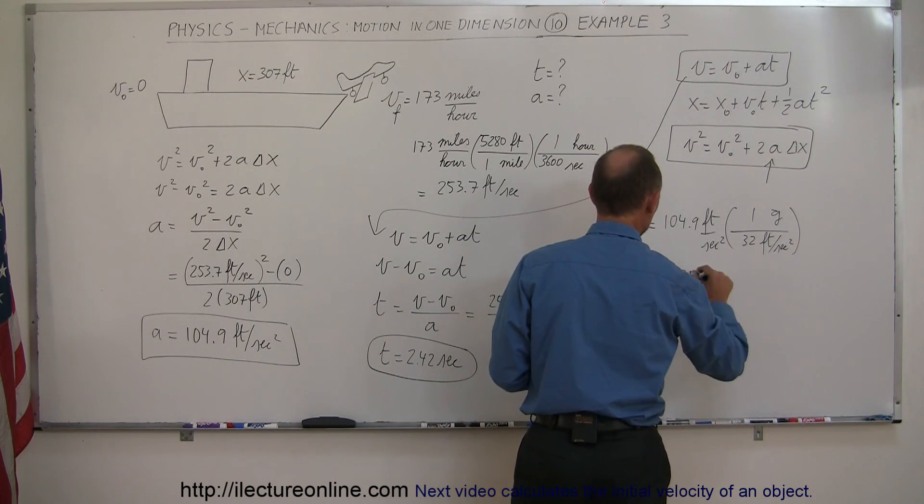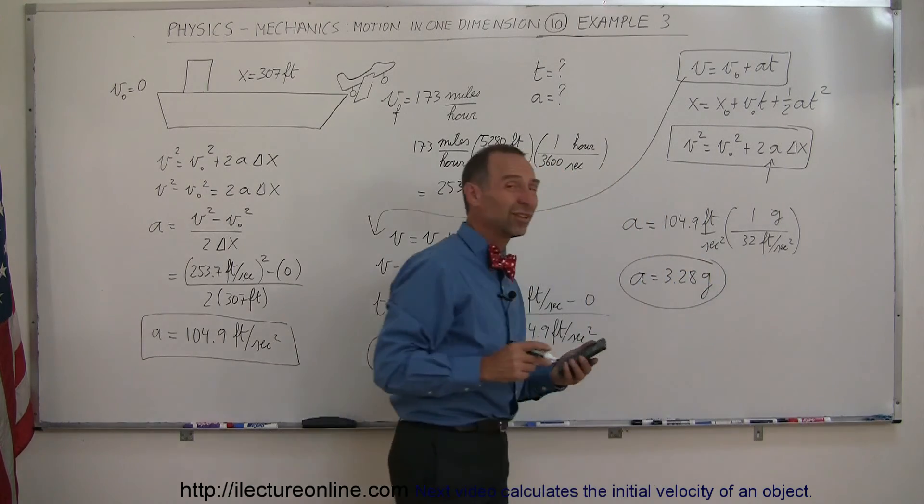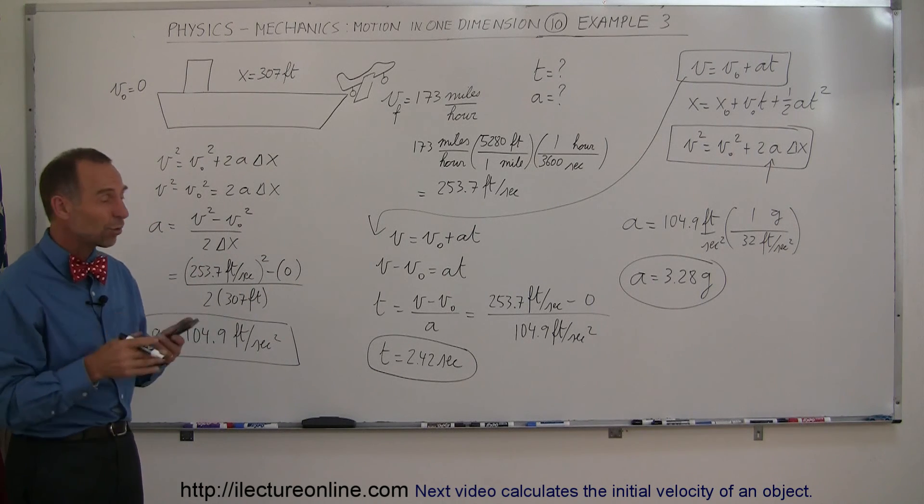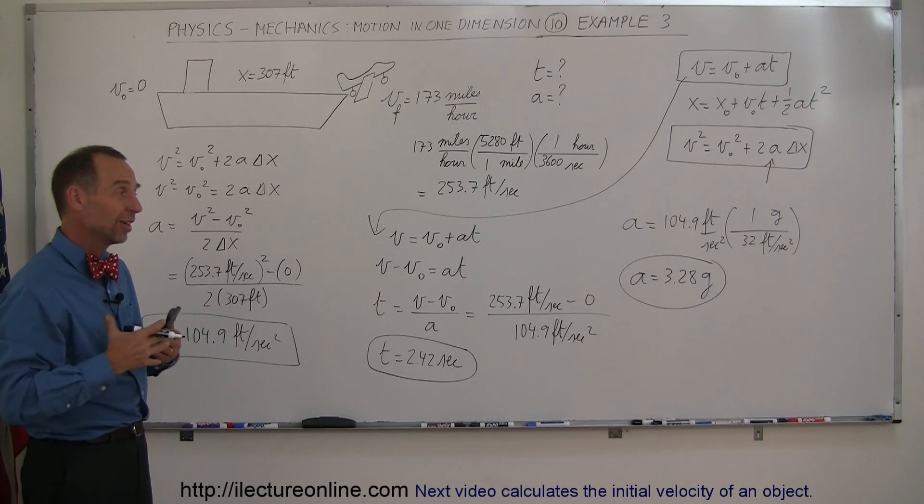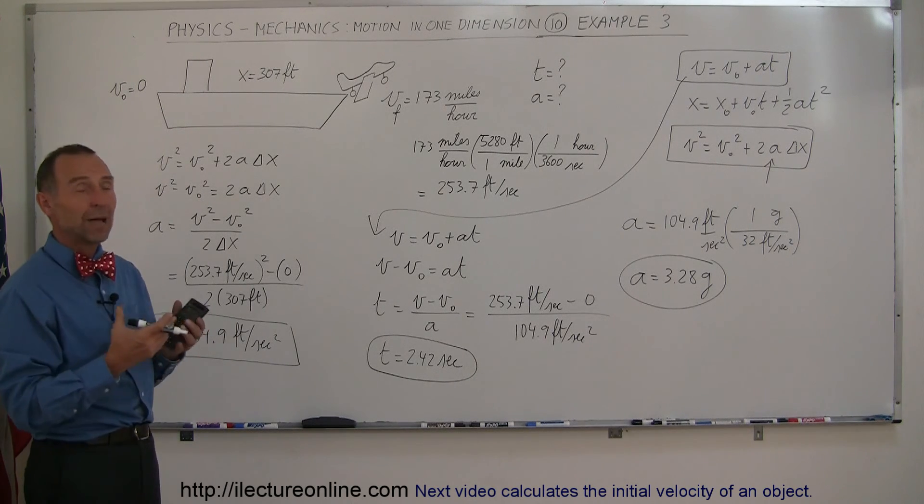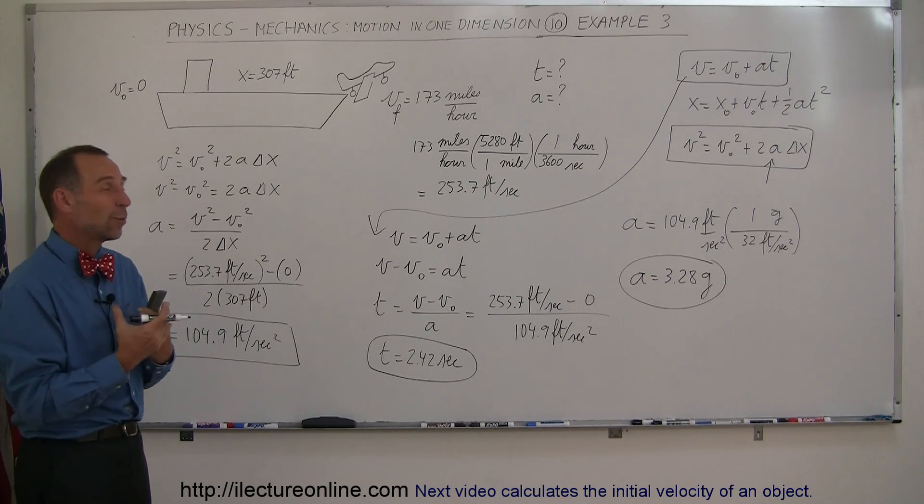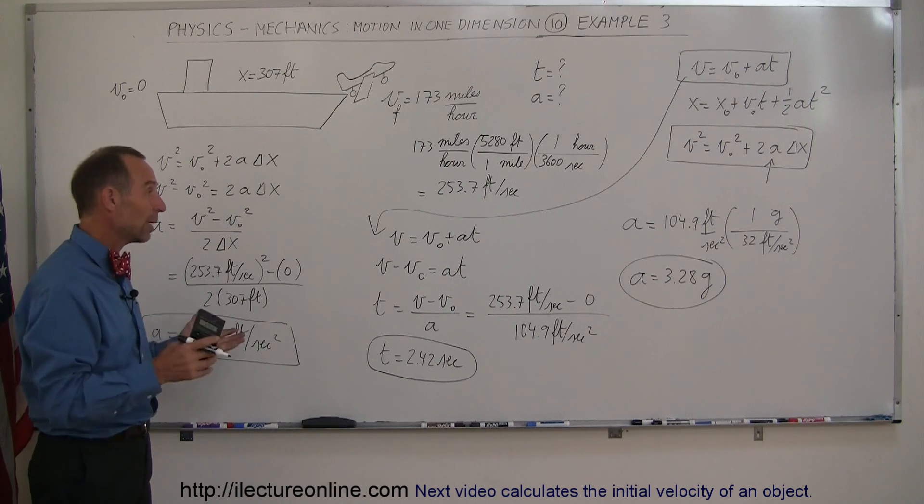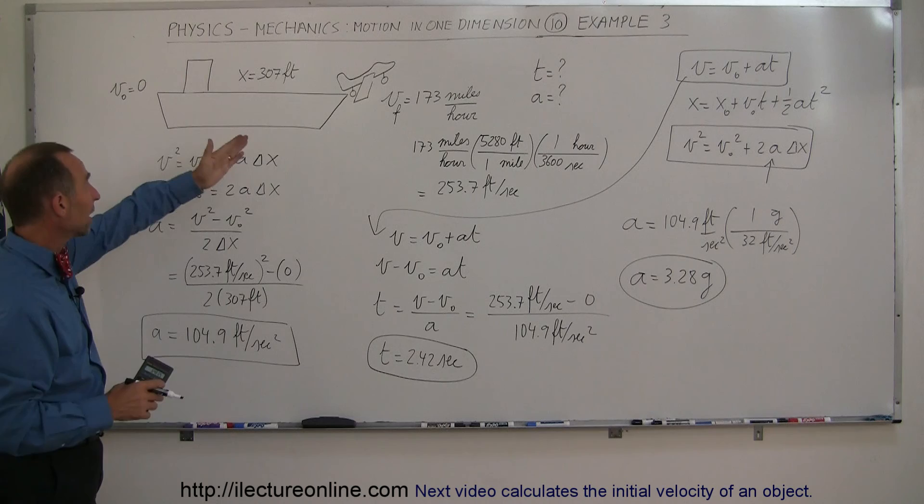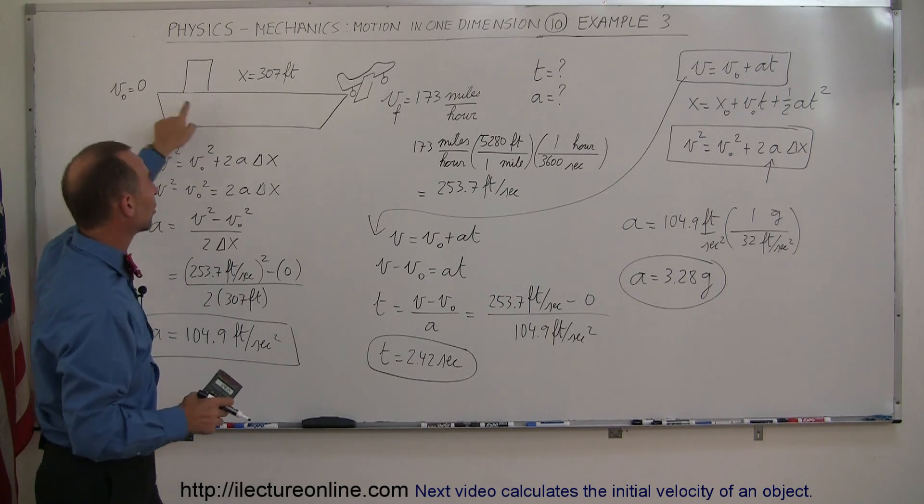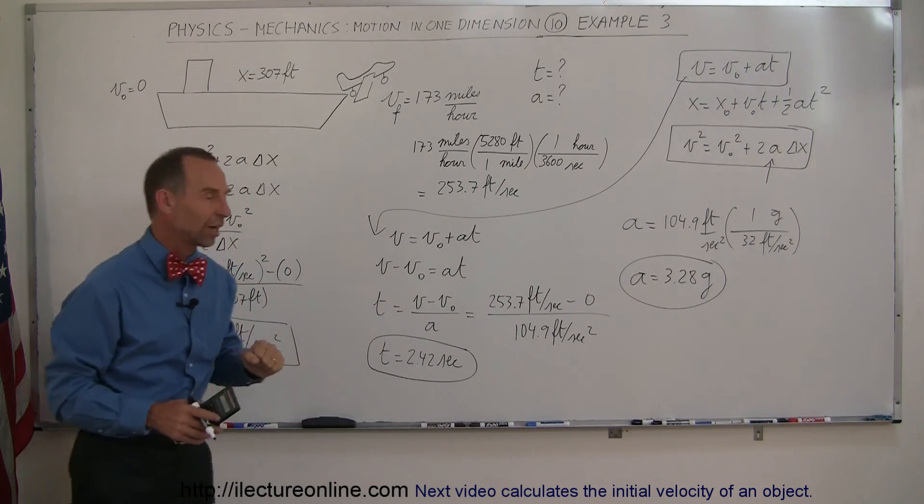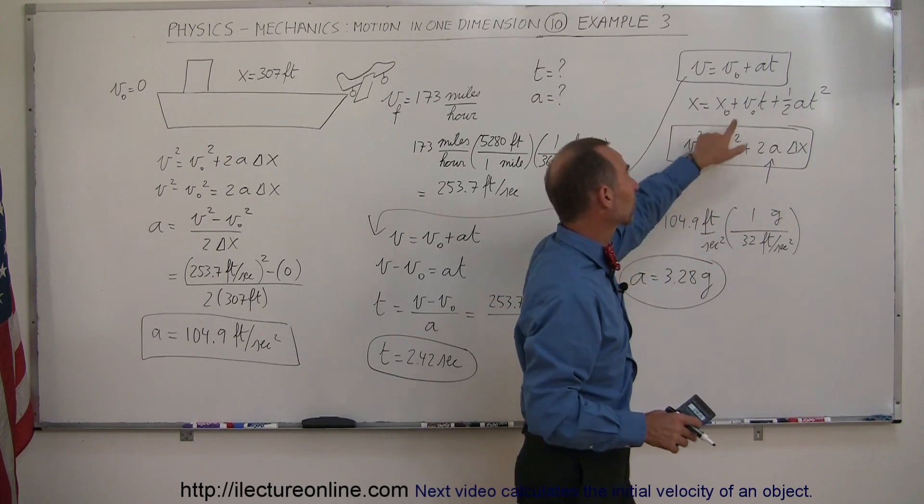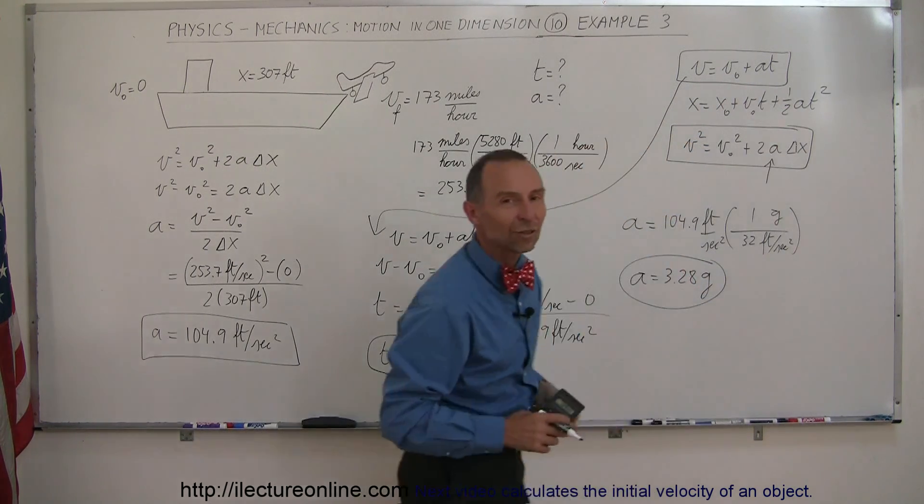So A equals 3.28 g's. So the acceleration that the pilot feels when that airplane takes off in the aircraft carrier is more than three times acceleration of gravity, which means the person, let's say a 150-pound pilot takes off, that pilot will feel like he weighs 500 pounds on takeoff. So a lot of force is acting on the pilot. But anyway, going back to the summary here, we have a plane taking off, distance is known, initial velocity is zero, final velocity is known, we have to convert to feet per second. We use the two equations of kinematics, this one first because it doesn't have time in it to find acceleration, then we plug the acceleration in here to find the time, and that's how you solve that problem.